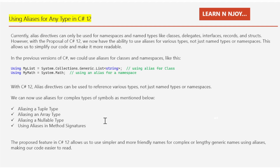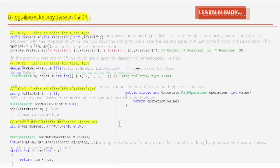Now with the new features in C# 12, we can use aliases for even more complex types. Let's explore some of the possibilities: aliasing a tuple type, aliasing an array type, aliasing a nullable type, and using aliases in method signatures. The proposed feature allows us to use simpler and more friendly names for complex or lengthy generic names, making our code easier to read.